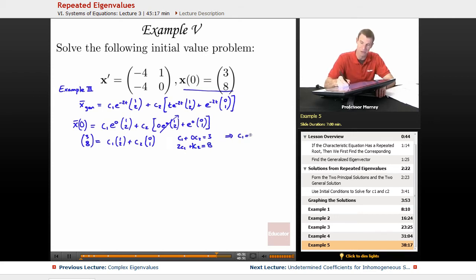Right away I can figure out that c1 = 3. If I plug in 3 there, I've got 6 + c2 = 8, so c2 would have to be 2. I've got my 3 and my 2 there, so I'm going to plug those in for c1 and c2.